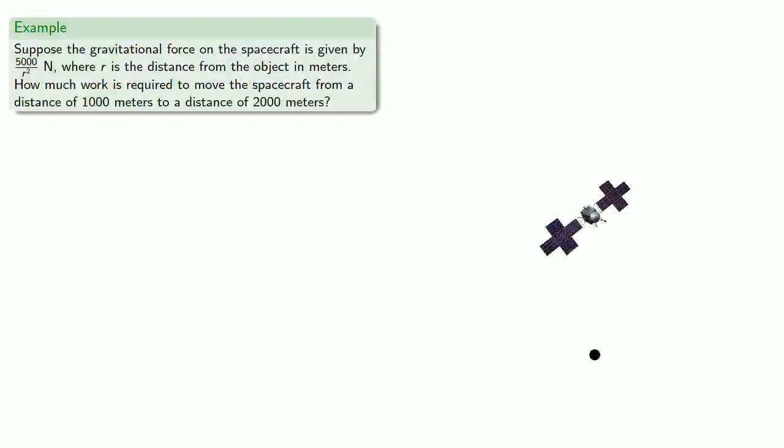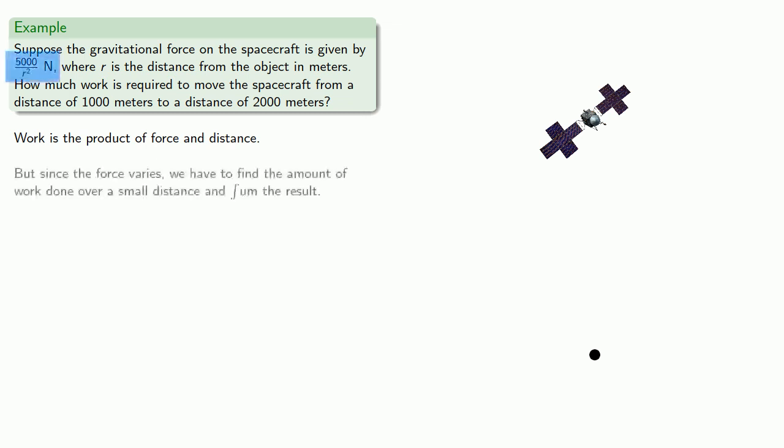For example, suppose the gravitational force in a spacecraft is given by 5,000 divided by r squared Newtons, where r is the distance from the object in meters. How much work is required to move the spacecraft from a distance of 1,000 meters to a distance of 2,000 meters? So again, work is the product of force and distance, but because the force varies, we have to find the amount of work done over a small distance and sum the result.